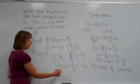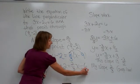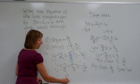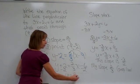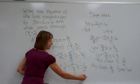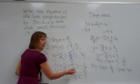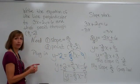Last step, we'll subtract 2 from both sides, and we get y is equal to 2 thirds x minus 8 for the equation of our line meeting those requirements.